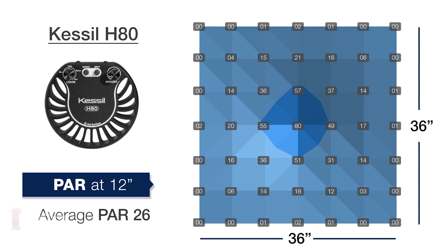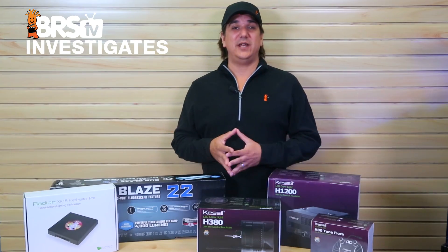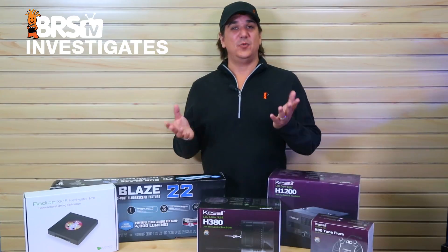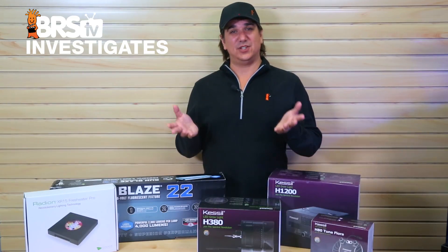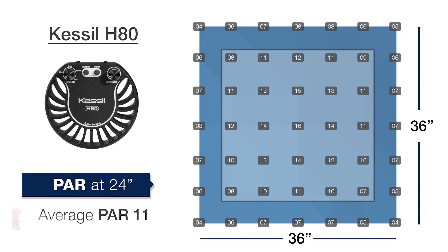It's probably not the fairest test because this light is certainly not designed to cover a two foot area from a 12 inch mounting height — it is likely better used for something like a hang-on or smaller fuge. However, for uniformity between all the lights tested we did raise it up to the 24 inch mounting height as well. The 24 inch average is 11 PAR — again, I don't think anyone would use this light this way.